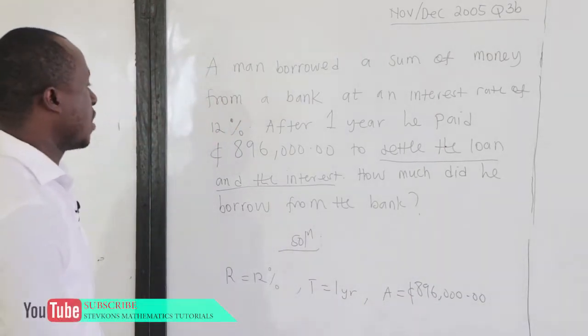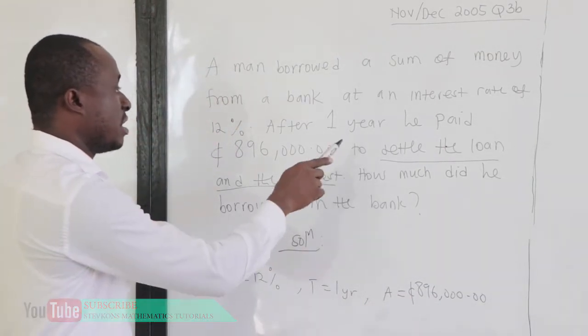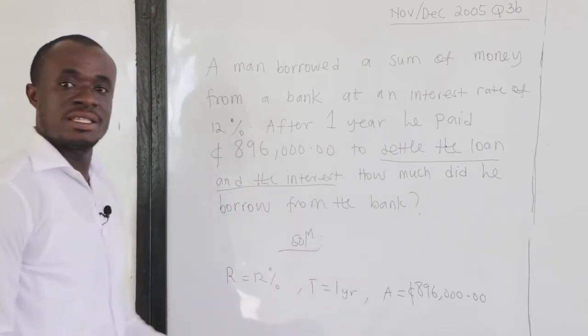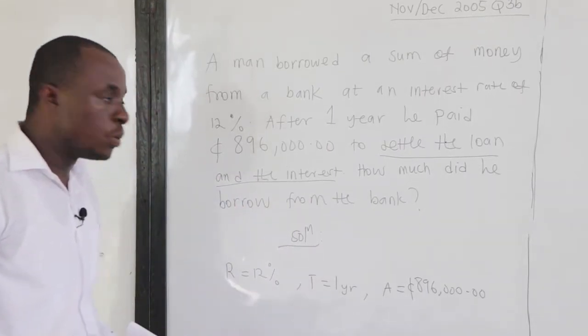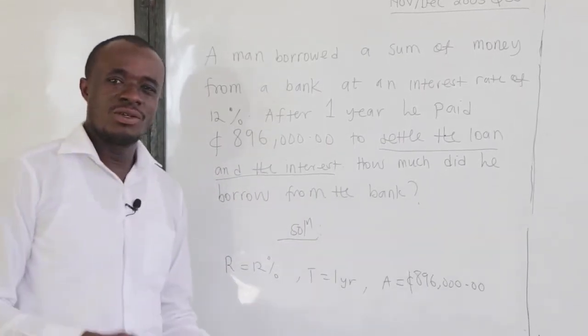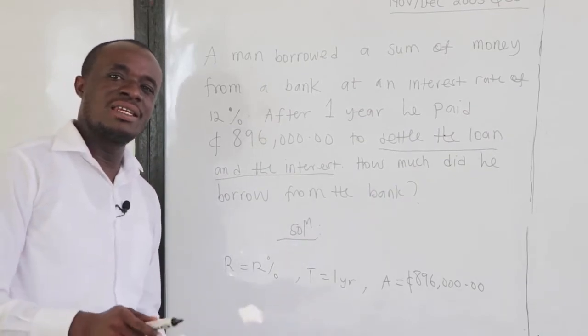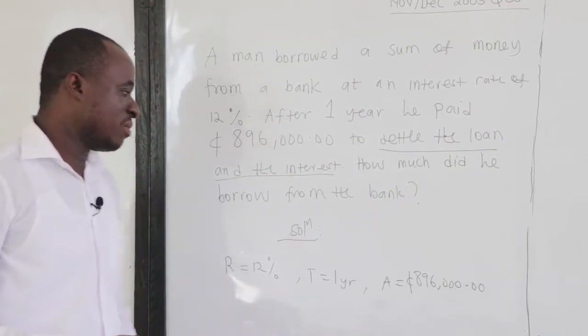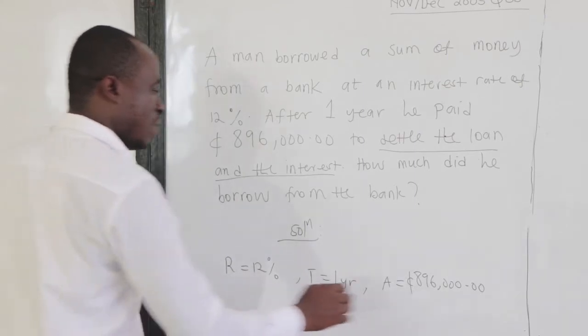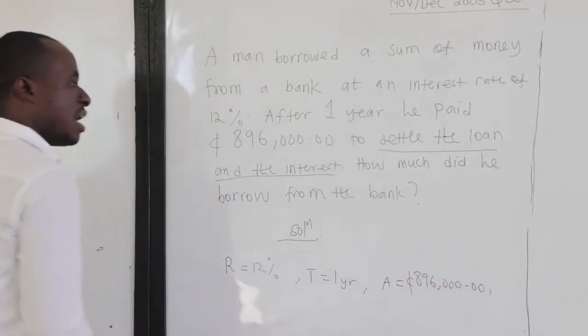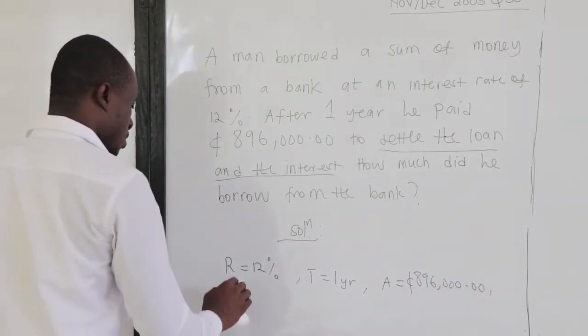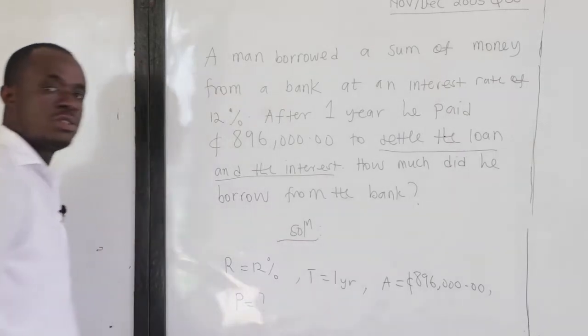Now, we are being told that after one year, he paid $896,000 to settle the loan and the interest. So that is the principal and the interest, which is the amount. Now clearly, what do we want? The question is, how much did he borrow from the bank? So, principal, the amount borrowed.